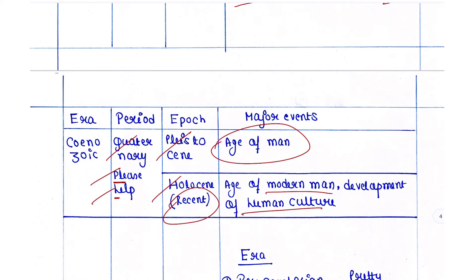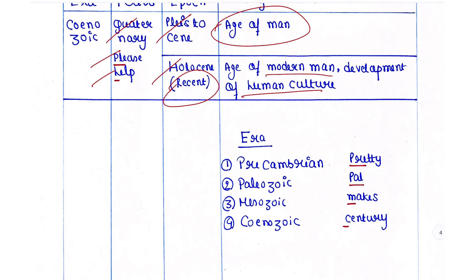To summarize, there are four eras: Pre-Cambrian, Paleozoic, Mesozoic, and Cenozoic. To remember them, use the sentence: 'Pretty Pal Mex Century' — 'pretty' for Pre-Cambrian, 'Pal' for Paleozoic, 'Mex' for Mesozoic, 'Century' for Cenozoic. Please try to remember all of these points — they are very important for your exam. That is all about geological time scale.